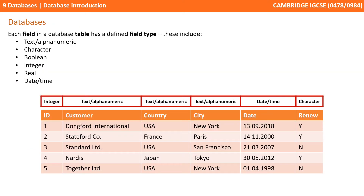Each field in the database has a defined field type. You can think of these a bit like data types from programming languages. You can choose from text and alphanumeric data types, characters, booleans, integers, reals, or a date time field.